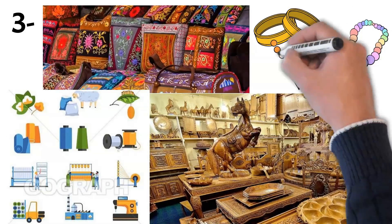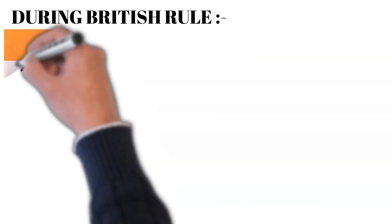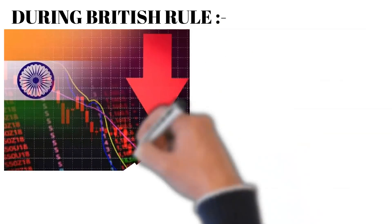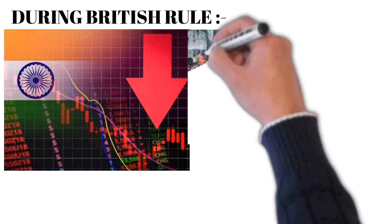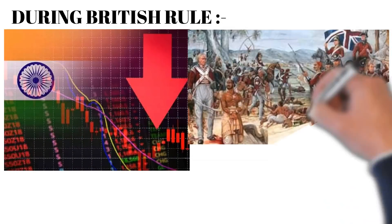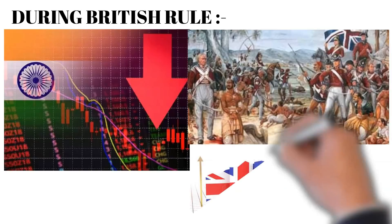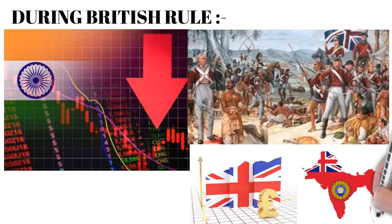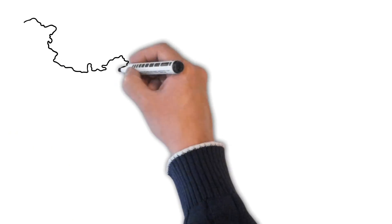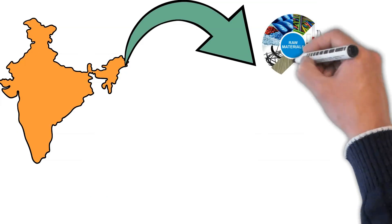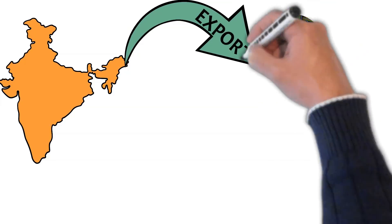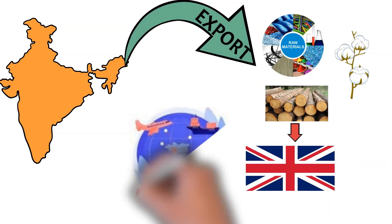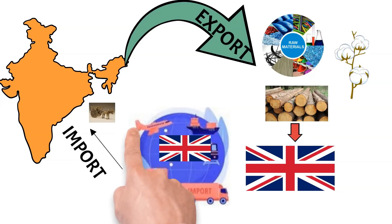But after British rule arrived, the Indian economy was exploited because the economic policies followed by the colonial government in India promoted British development, not India's. They made India a supplier of raw materials — exporting raw materials from India to Britain, manufacturing finished goods there, and selling them back in India's market.